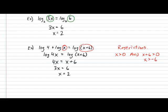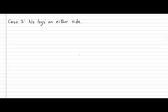And x equals 2 is a valid answer because it does not violate our restrictions. Finally, let's look at a case 3 type of log equation — the case where you start with no log on either side of the equal sign. Case 3 is perhaps the single most powerful case of solving a log equation, as it finally allows you to solve any missing exponent for any combination of base and power.